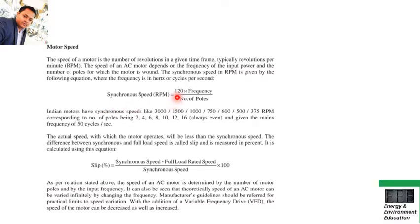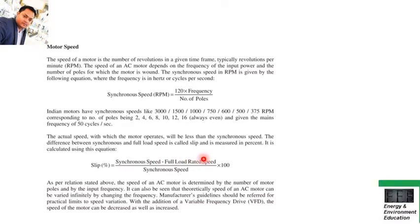The synchronous speed formula is 120 times f divided by P. Another important formula is slip percent: synchronous speed minus full load rated speed, divided by synchronous speed, multiplied by 100. They will give you the synchronous speed and full load rated speed and ask you to calculate slip percent — unless you remember this formula you will not be able to calculate it.